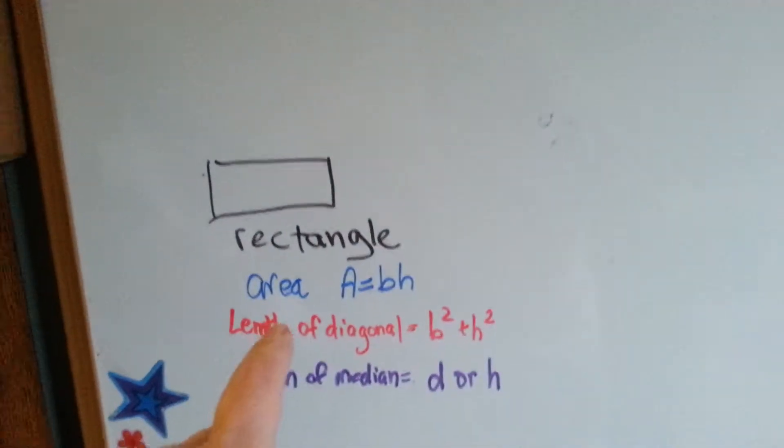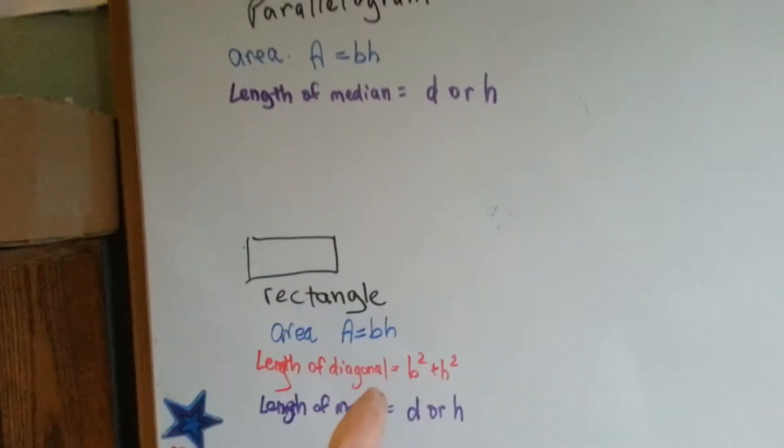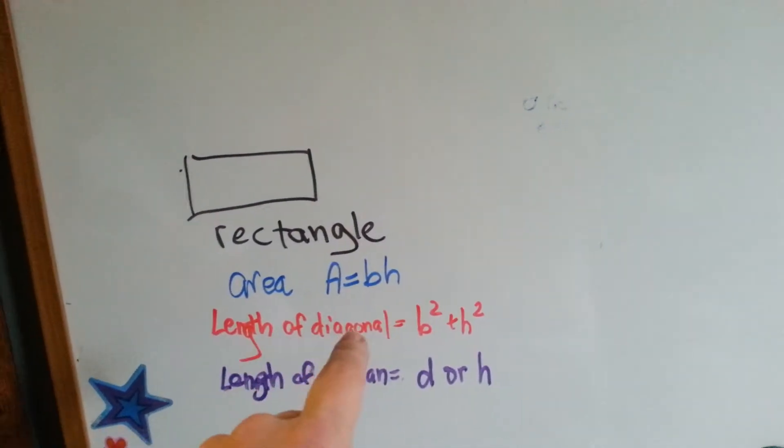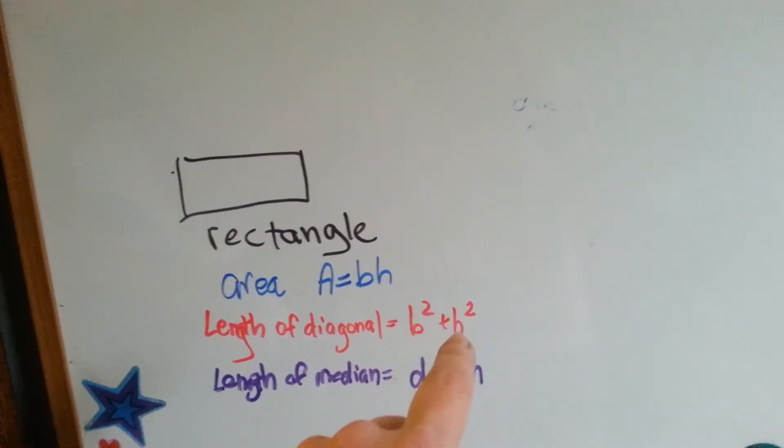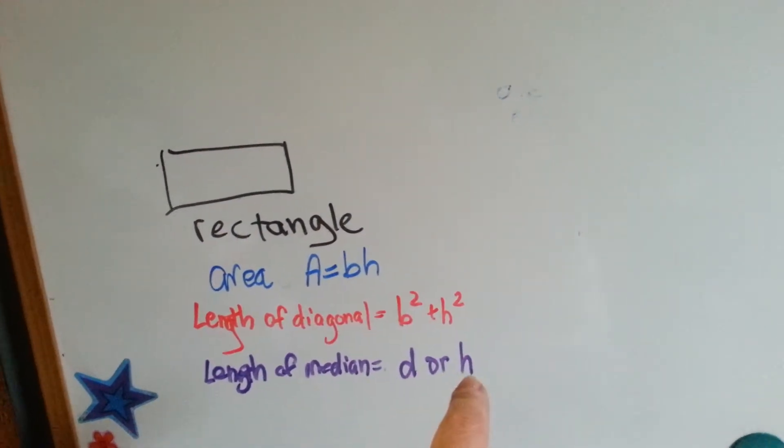For a rectangle, the area is base times height, just like in the parallelogram. And the length of the diagonal is the base squared plus the height squared. The length of the median is just the diagonal or the height.